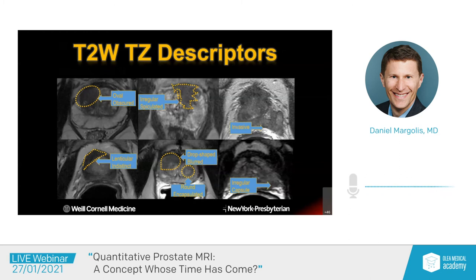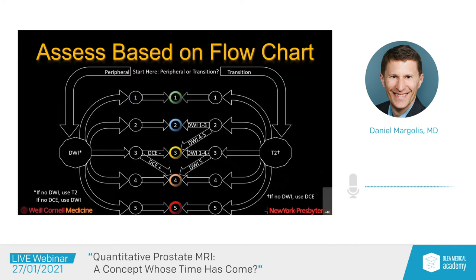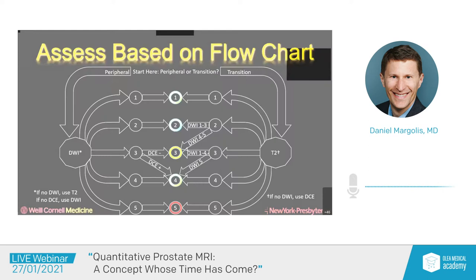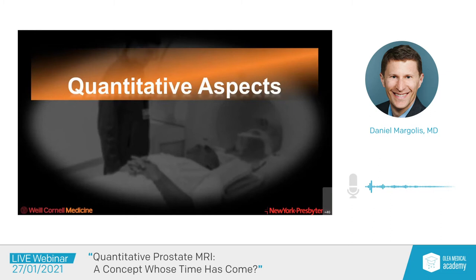Here's how we give the overall PI-RADS category. You might think this is also quantitative because it's a numerical score, but in fact this is considered a ranked category. These are numerical categories that confer differing and increasing levels of suspicion, but they're not based on quantitative factors except for size. That brings us to: how can we incorporate quantitative aspects into prostate imaging?